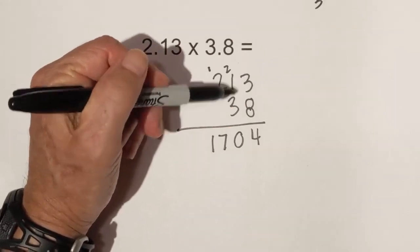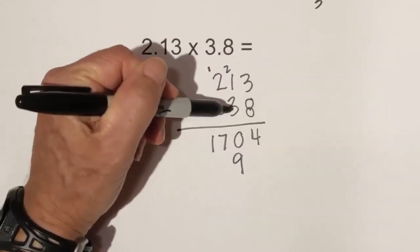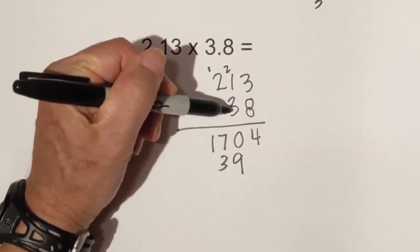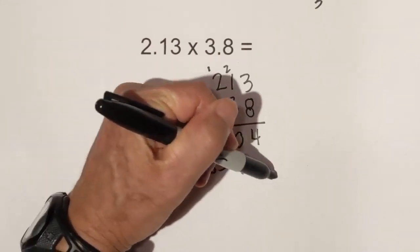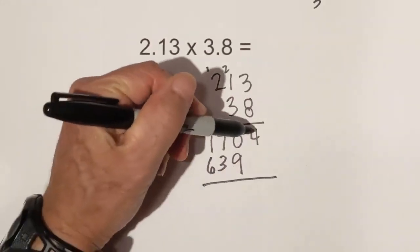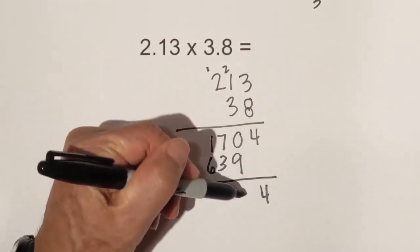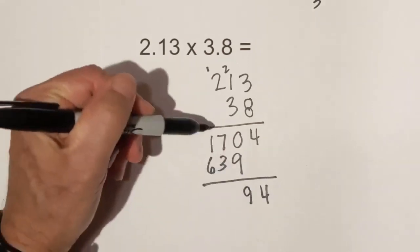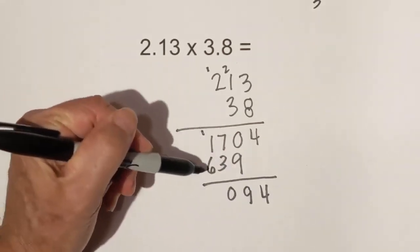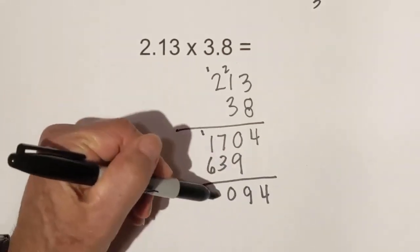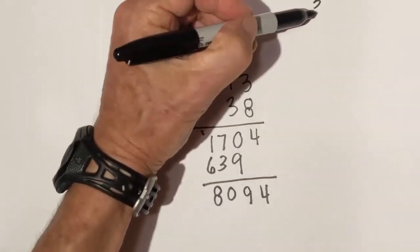Now multiply the 3: 3 times 3 is 9, 3 times 1 is 3, 3 times 2 is 6. Add these together: we have 4, 9, 10 — bring over the 1 — giving 6, 7, 8, so 8094.